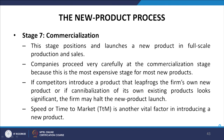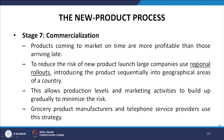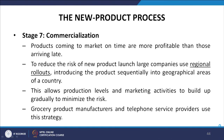Stage seven is commercialization, which positions and launches a new product in full-scale production and sales. This is the most expensive stage. If competitors introduce a leapfrog product or if cannibalization of existing products looks significant, the firm may halt the launch. Speed to market is also vital — products arriving on time are more profitable than those arriving late. Large companies use regional rollouts, introducing the product sequentially into geographic areas to allow production levels and marketing activities to build up gradually and minimize risk.